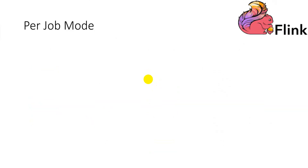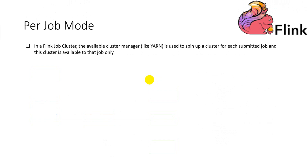The second deployment model is the per-job model. In a Flink job cluster, the available cluster manager, like YARN, is used to spin up a cluster for each submitted job, and this cluster is available to that job only.